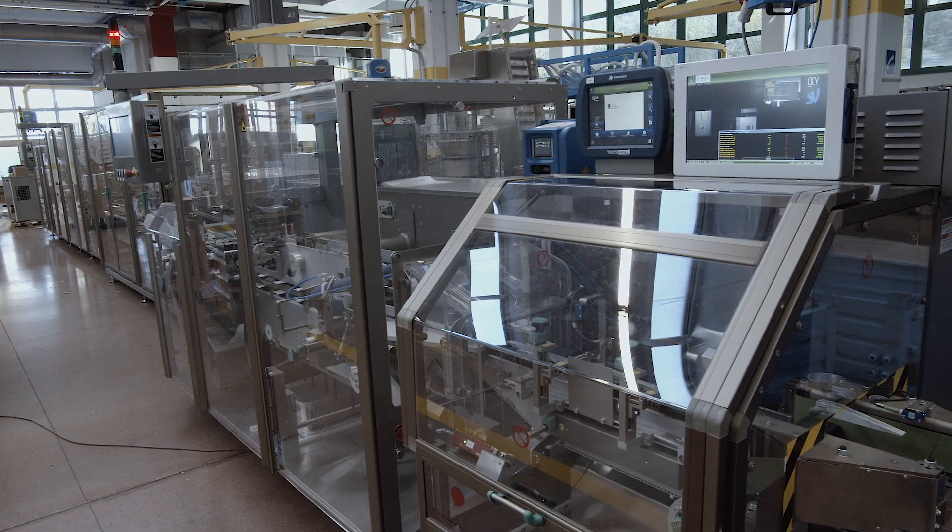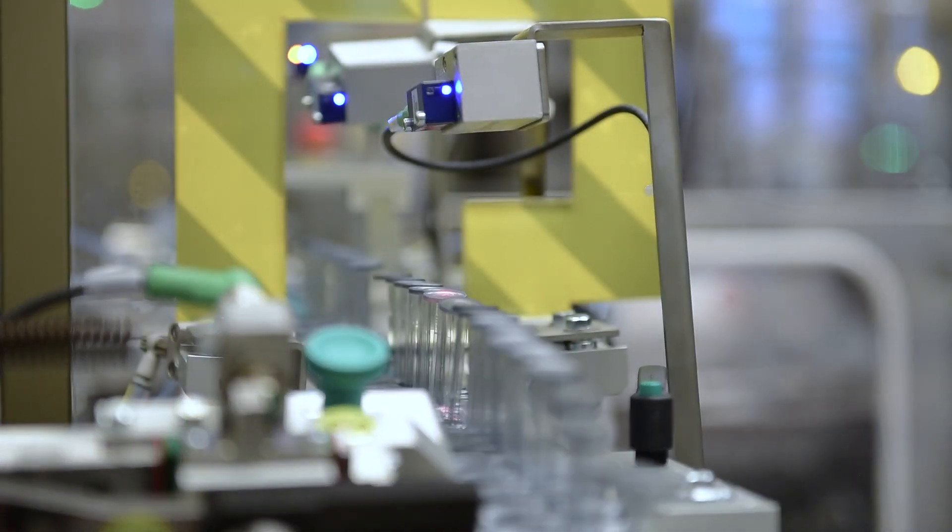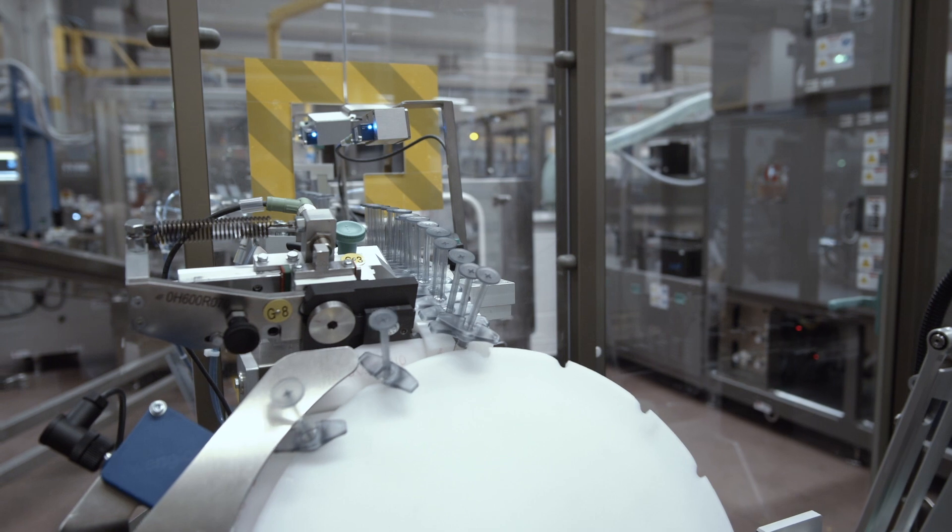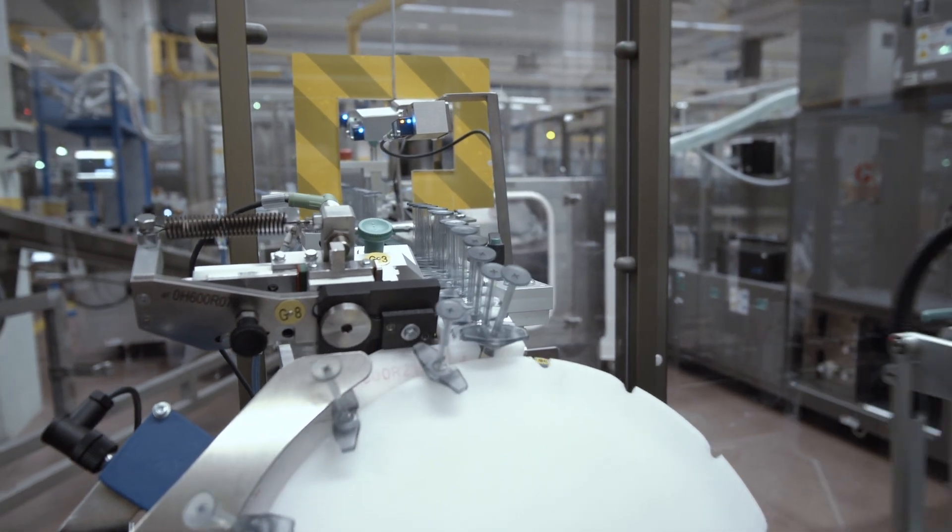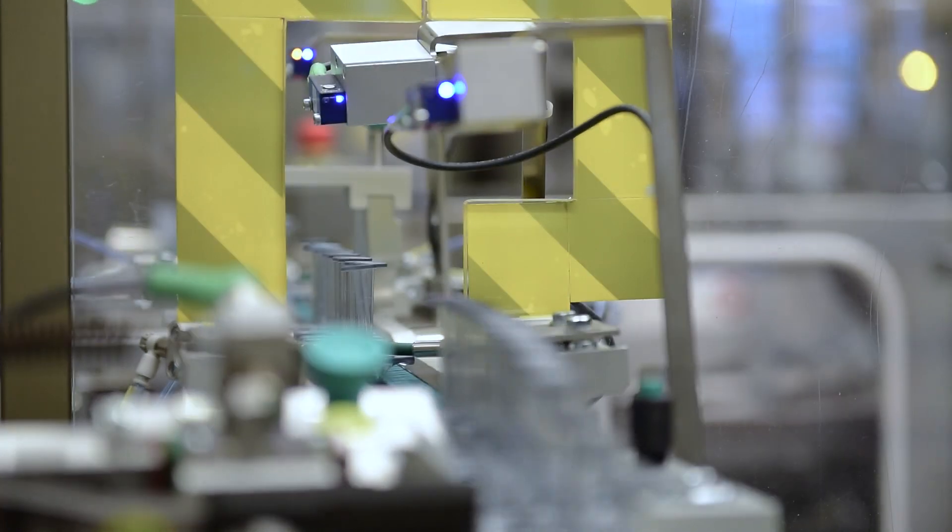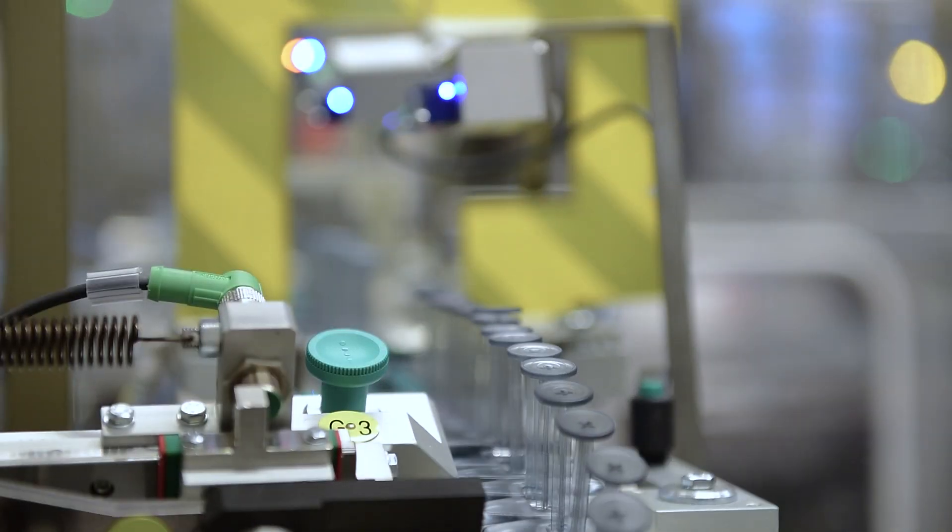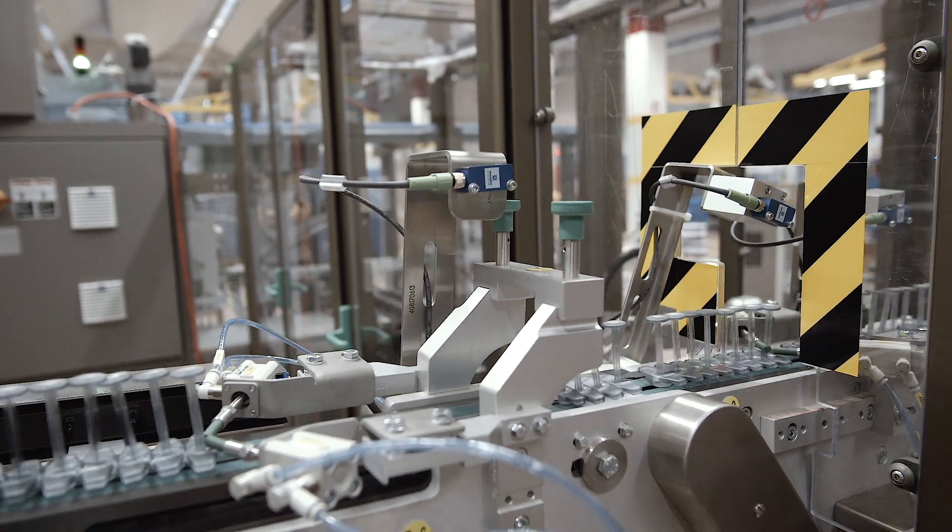The fully automated packaging process begins in these packaging lines with lengths of up to 20 meters. Cannulas, syringes, vials, labels, and accessories are fed to the system, sorted and positioned in large quantities at high speed.